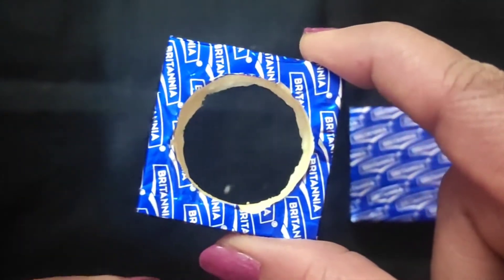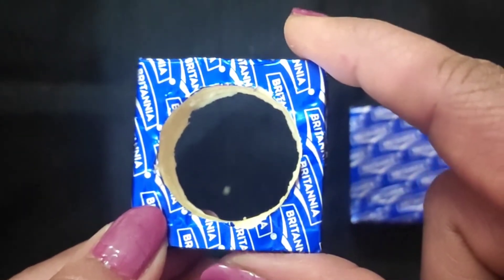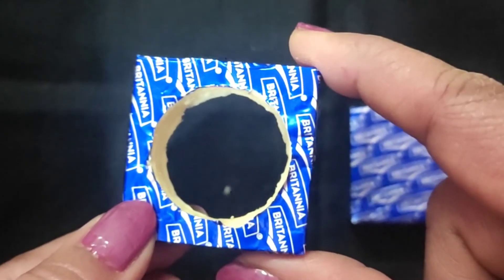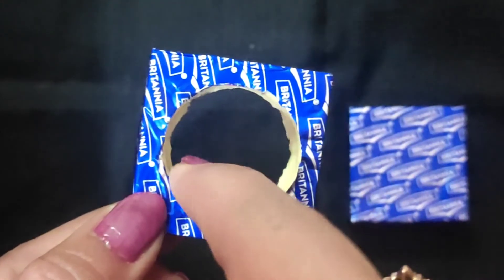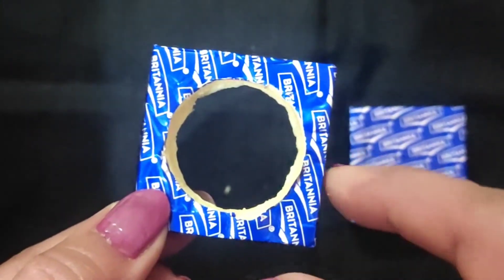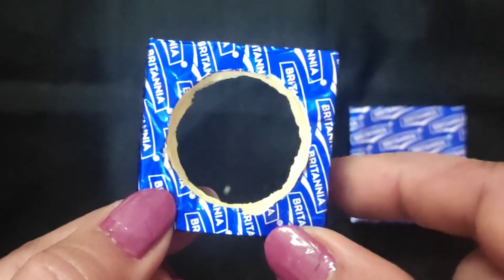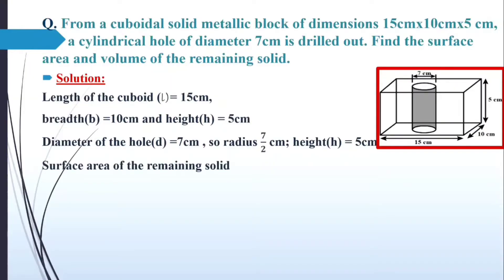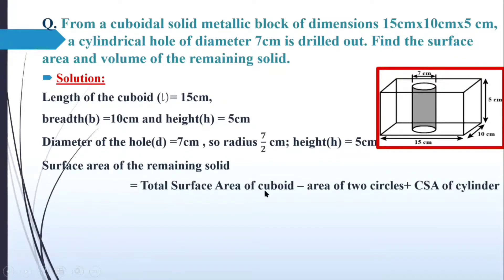If I wanted to find out the volume, that is simple. Most students are able to find the volume of the remaining solid — it is the volume of the cuboid minus the volume of the cylinder: LBH minus πR²H. The surface area of the remaining solid equals the surface area of the cuboid minus the area of the two circles (top and bottom), plus the curved surface area of the cylinder: 2(LB + BH + LH) minus 2πR² plus 2πRH.